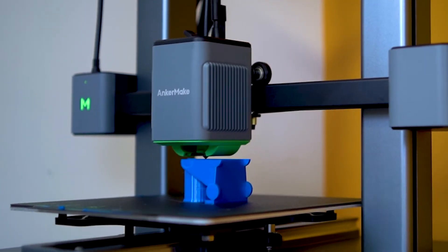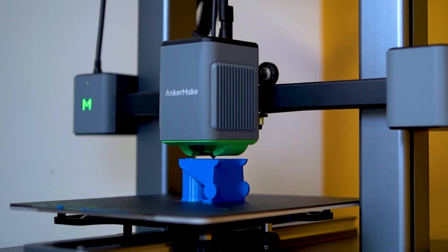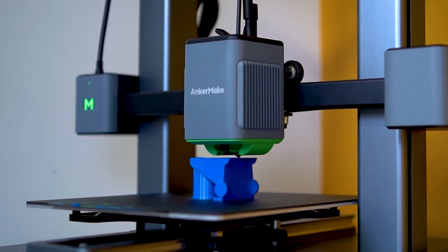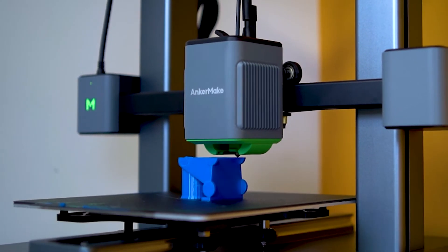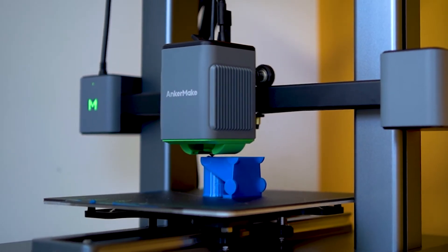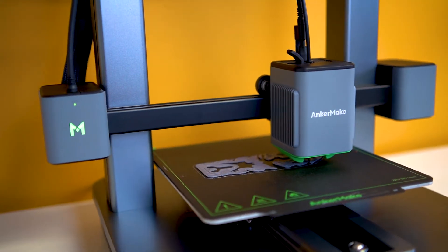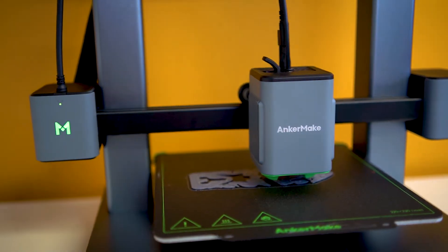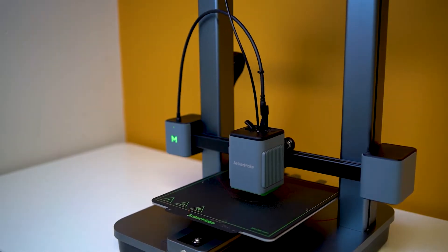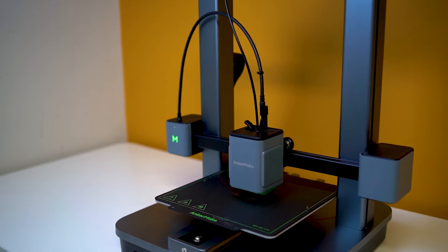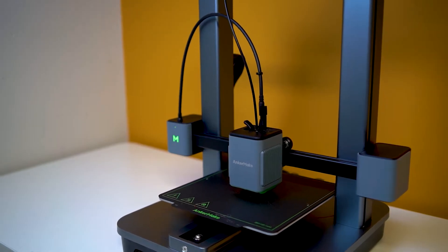For those of you that do print in anything over 250°C, the M5C is now going to be capable of printing up to 300°C and essentially any engineering grade filament. Of course, it is not enclosed, so you might need to get yourself an external enclosure, but the M5C is now capable of engineering grade materials.